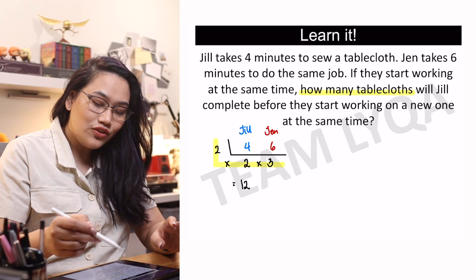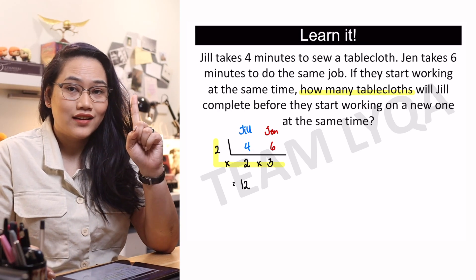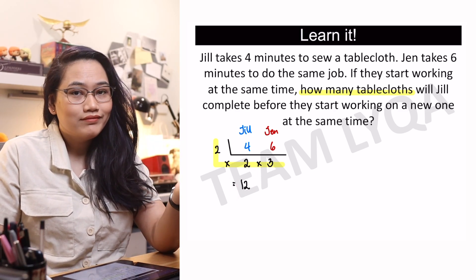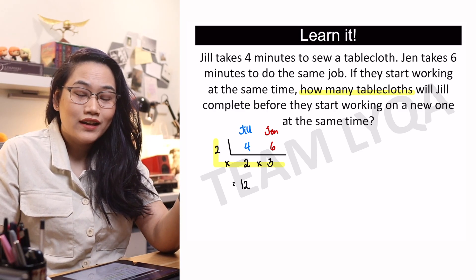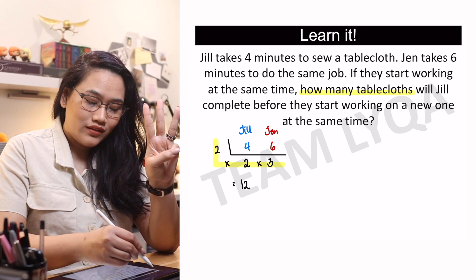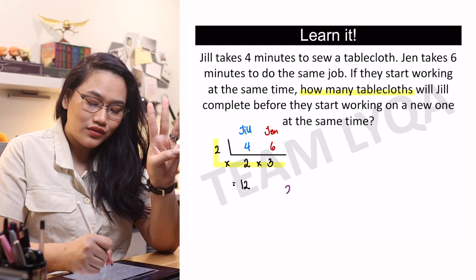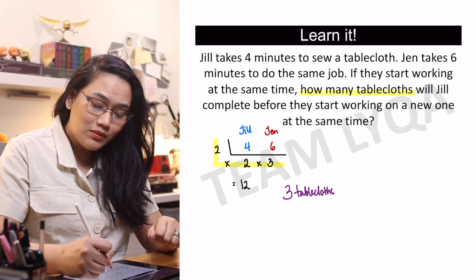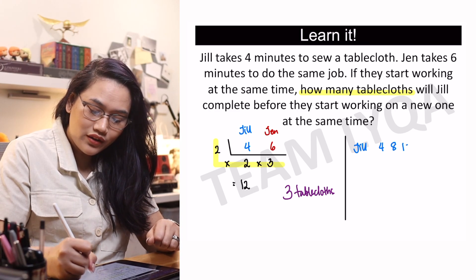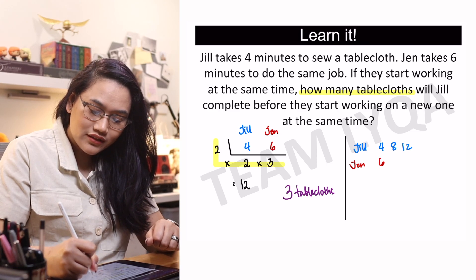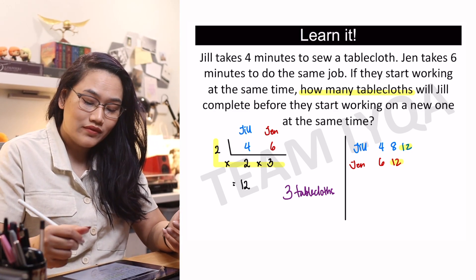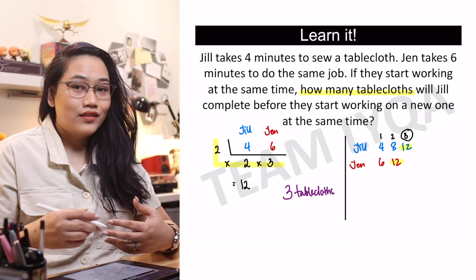There's no more shared factor after that, so we can now find the LCM. We multiply everything together: 2 times 2 is 4, times 3 is 12. So 12 minutes is the time it will take for them to start a new tablecloth at the same time. But since the question asks for the number of tablecloths — not the time — we look at how long Jill takes per tablecloth. If she finishes one every 4 minutes, how many can she finish in 12 minutes? 4, 8, 12 — that would be 3 tablecloths. Using the listing method: Jill's multiples are 4, 8, 12; Jen's are 6, 12. They match at 12, and counting Jill's entries: 1, 2, 3. The answer is the same.